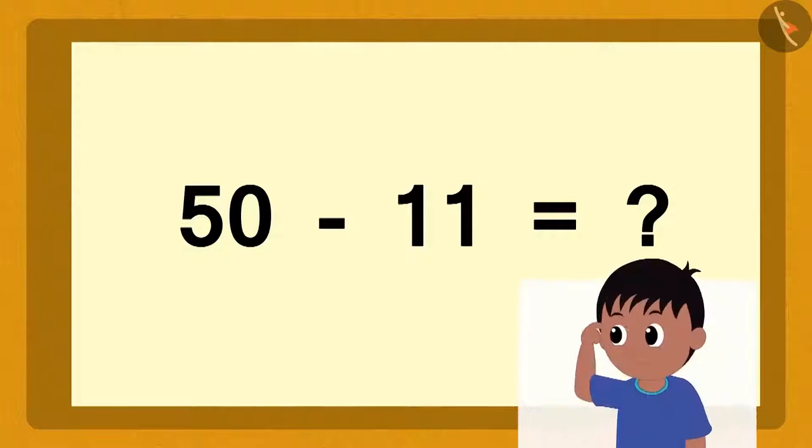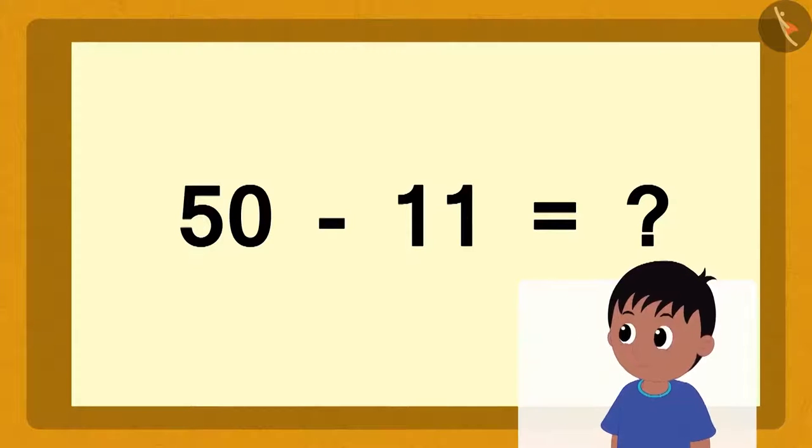But Raju started thinking because he could not understand how he could possibly subtract one ones of eleven from zero ones of fifty.